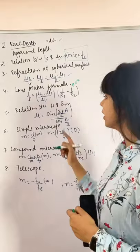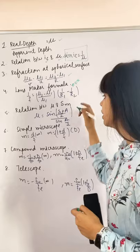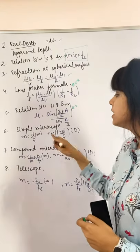Next would be relation between refractive index and angle of minimum deviation. This is also very important. Simple microscope.